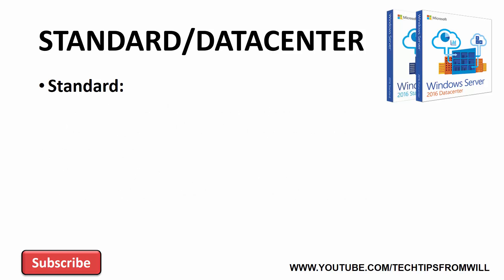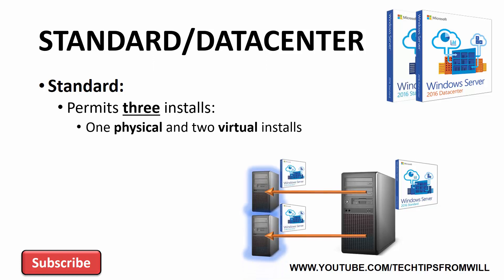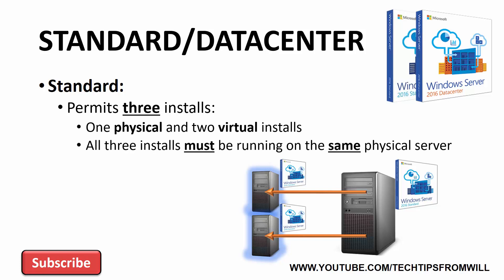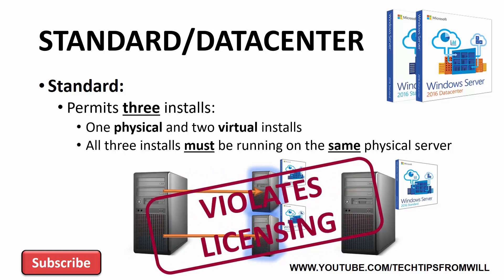When you purchase the Standard Edition, you are licensed to install the operating system three times. One of these installs is permitted on a physical server, whilst the other two can be used for virtual servers. Understand, though, that in order to stay compliant with Microsoft licensing, all three of these installs must be running on the same physical server. You cannot install it on a physical server and then install the two virtual instances on a different physical server.